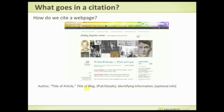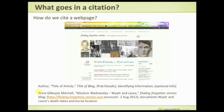Title of the blog, publication details, identifying information, and then optional info — you may want to say what you got out of it. I'll put my name because I'm the author of the blog. If you don't know who the author is, some people don't make that obvious, you can just leave it off. The title of this article is 'Wisdom Wednesday: Wyatt and Laura.' This is a blogging prompt that belongs to Geneabloggers, and if you blog about genealogy I suggest you sign up on Geneabloggers — it's a great way to publicize your blog.